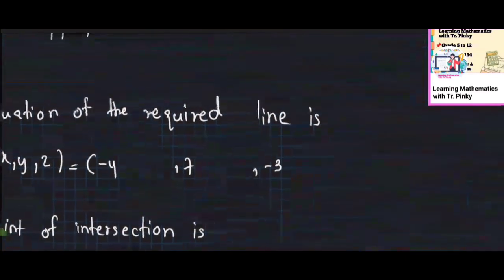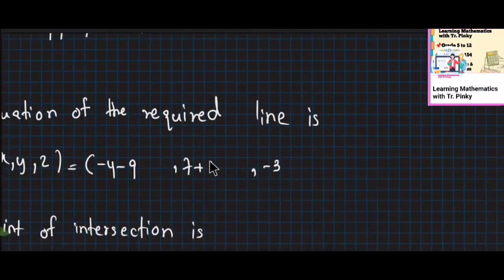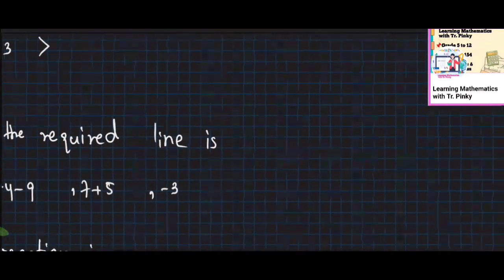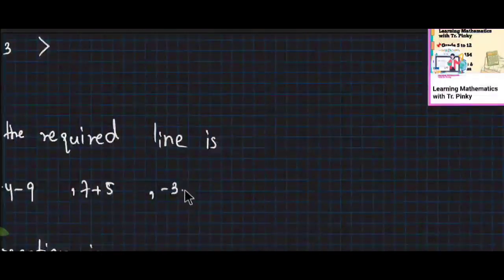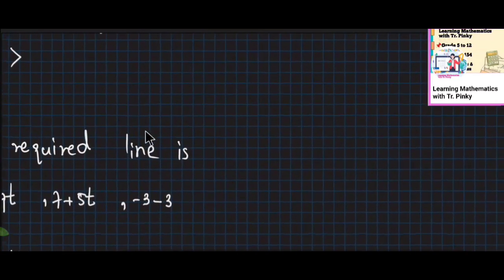And then minus 9 plus 5 minus 3. I'm going to look at this constant. If we had a constant, we could get a little more detail, and the value allows us to proceed.